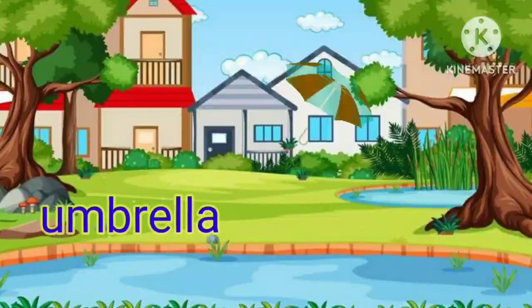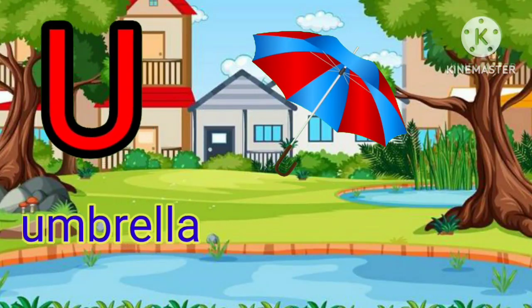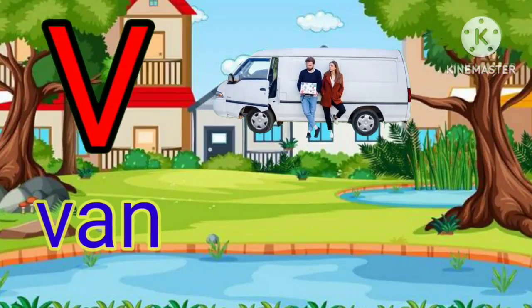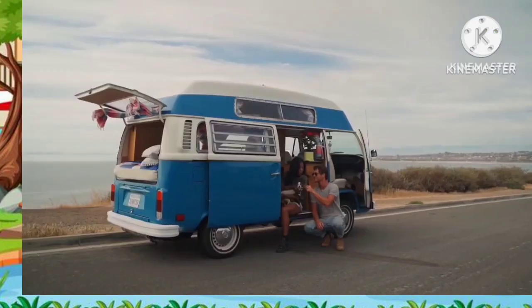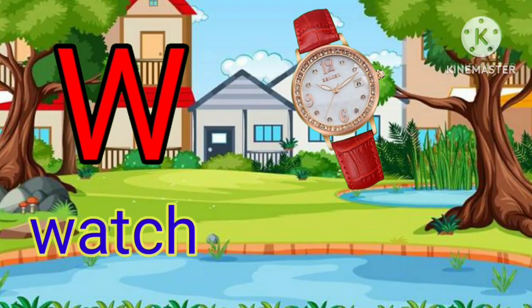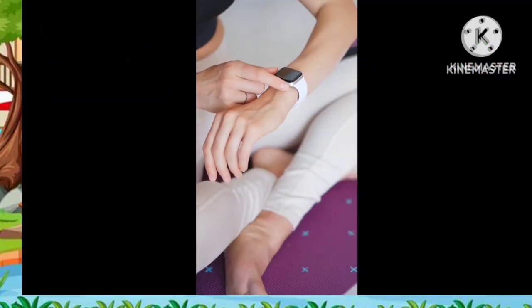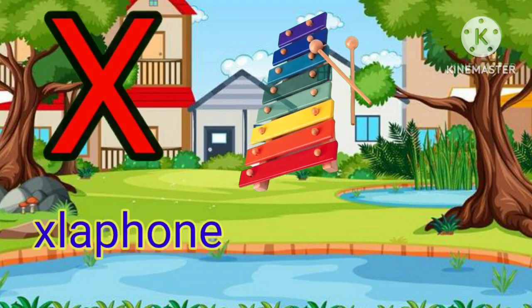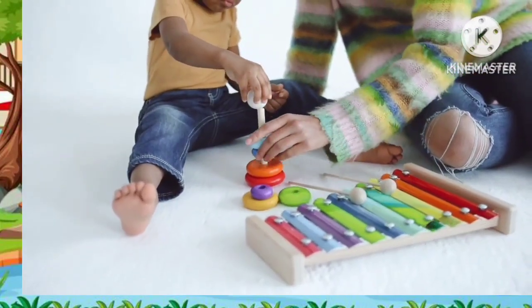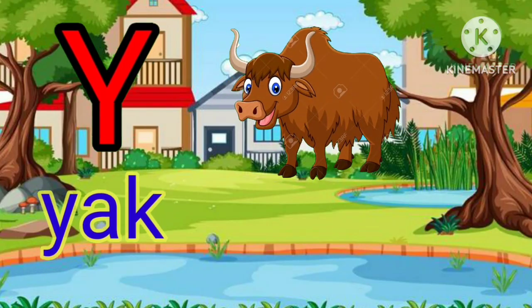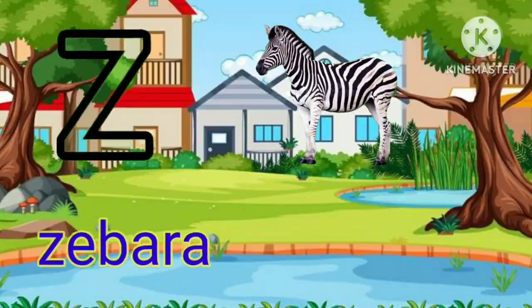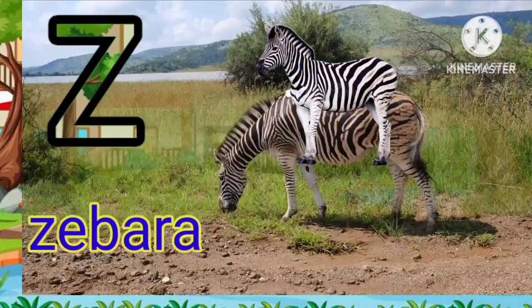U for umbrella, V for owl, W for owl, X for owl, Y for owl, Z for zebra.